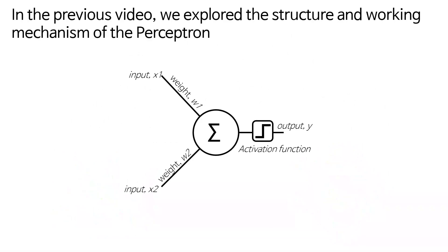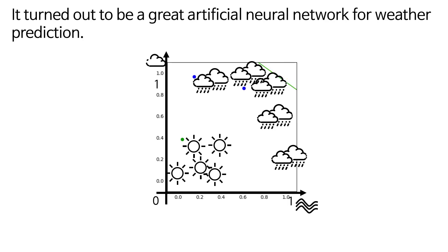In the previous video, we explored the structure and working mechanism of the perceptron. It turned out to be a great artificial neural network for weather prediction.